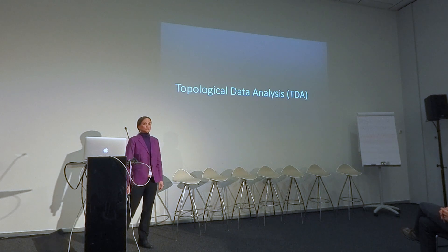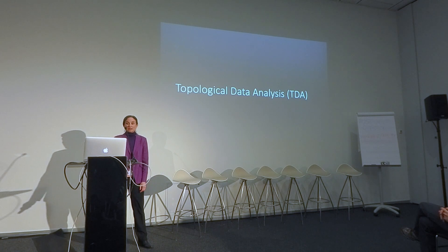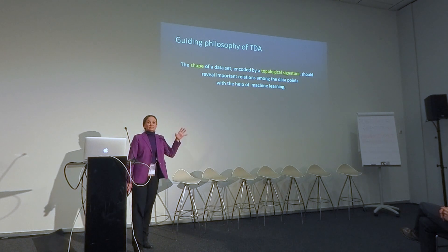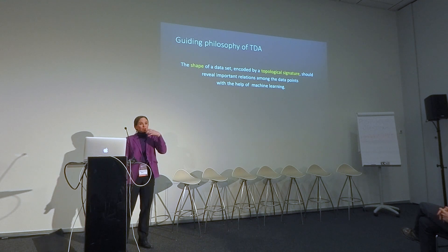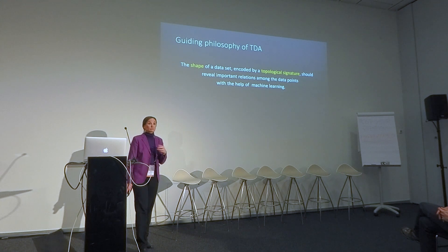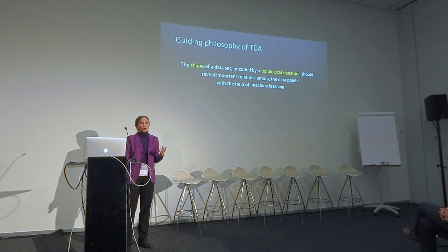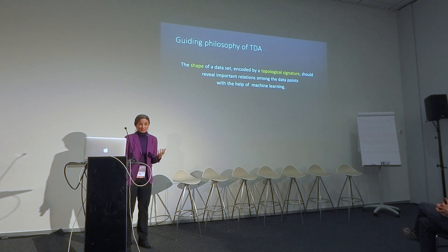I'm going to start with a brief overview of what's called topological data analysis, or TDA. The guiding philosophy of TDA is that if you have big data — a point cloud of, say, high dimensional data — one way to try to understand the data and let it speak to you is to look at its shape, which you want to try to encode by some sort of topological signature. I'm going to describe a few of these possible topological signatures, which you can then use as inputs to different machine learning tools to work on problems of classification and so on.